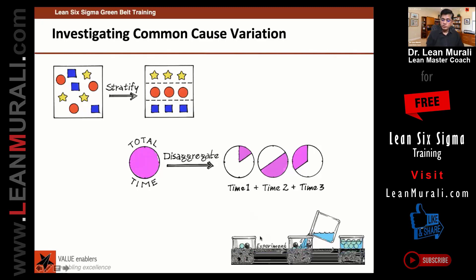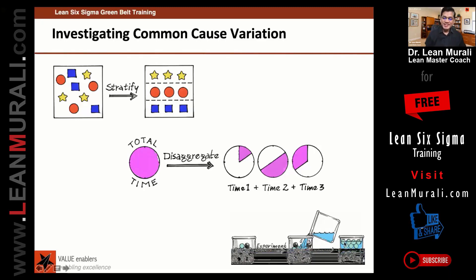The third strategy is experimentation. In this experiment, you have something mixed up, but when you pour the water, something settles down and something floats up. Similarly, when you do experimentation, some causes will show up on the top and some will settle down at the bottom.